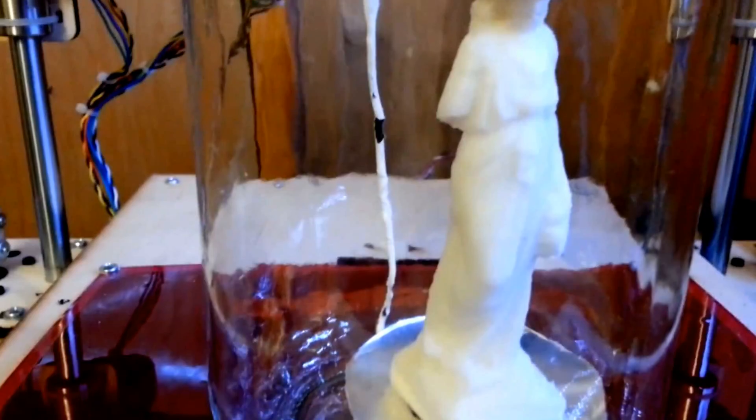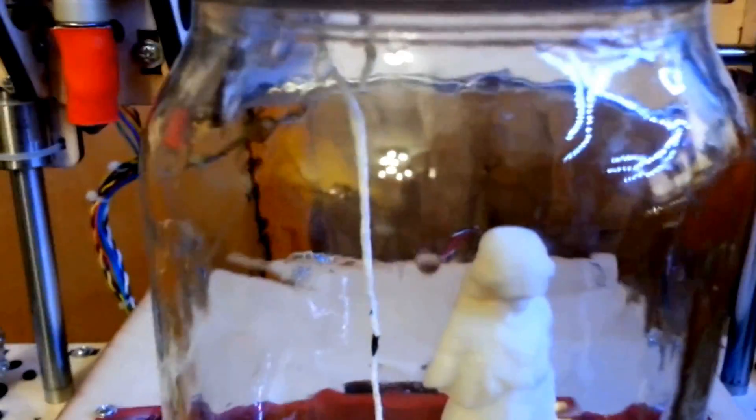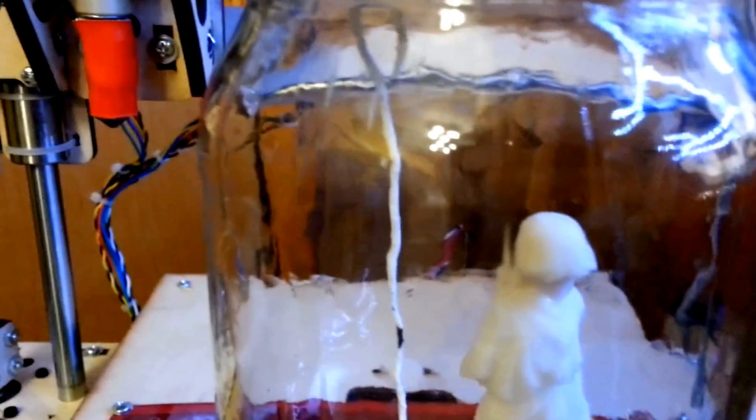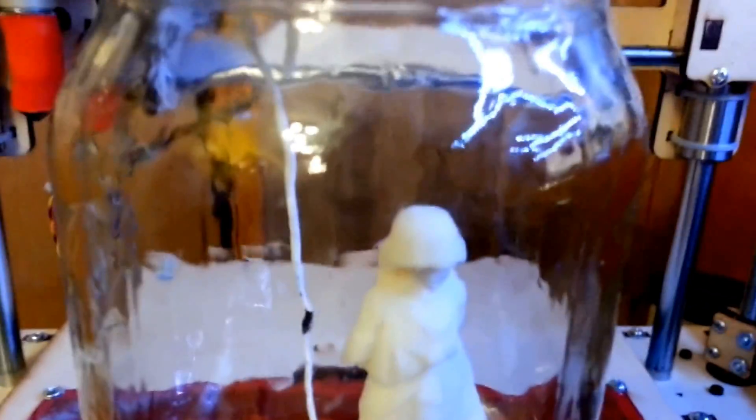You're going to be looking for vapor droplets, acetone droplets on your jar. I have acetone droplets on the top of my jar now. So I can tell that the whole jar is full of vapor because you can see it condensing from the top.